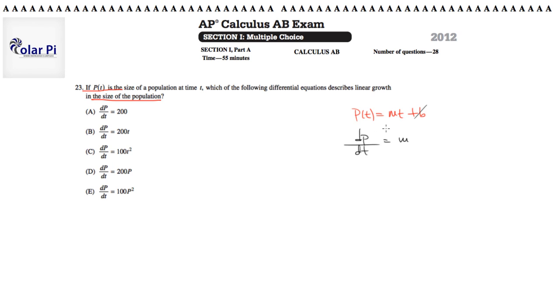And then the derivative of mt, where m is a constant and t is a variable, should just be m. And notice that p of t, the size of the population at time t, depends on t, not on any other variable. So this was correct for us to claim that the variable is t there.